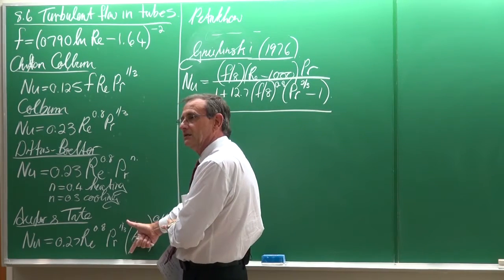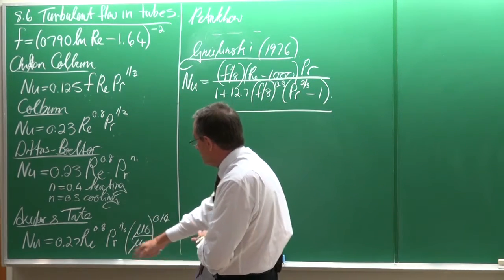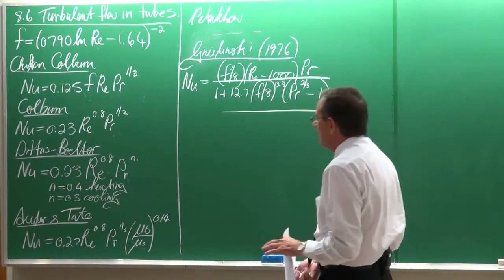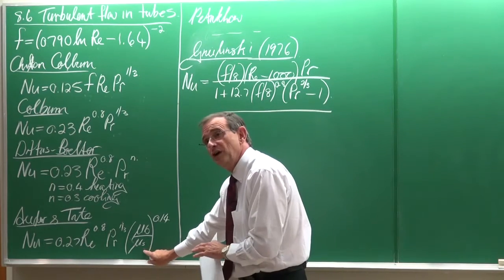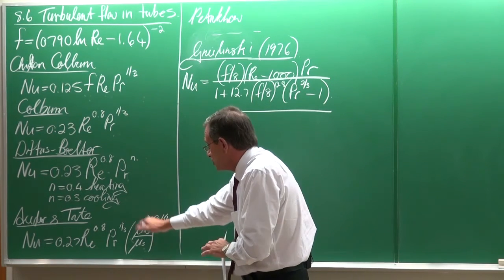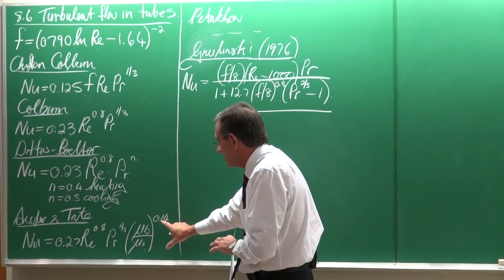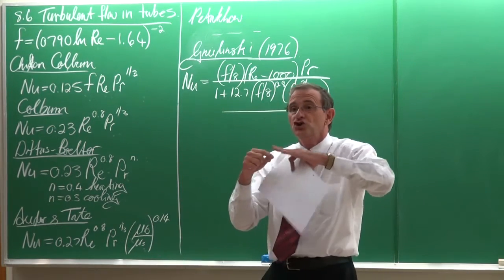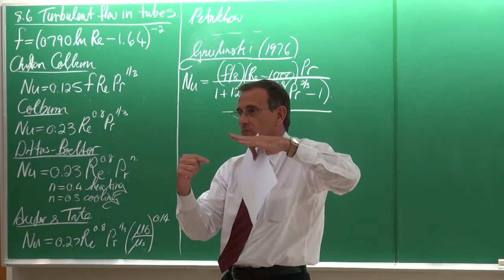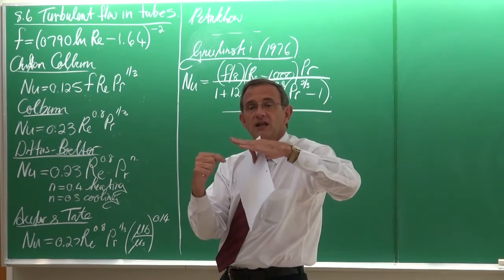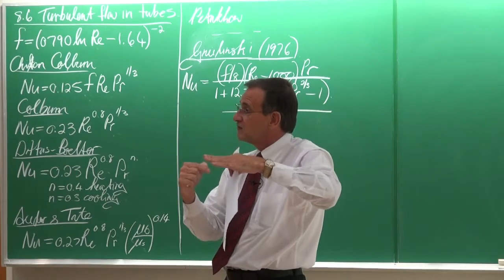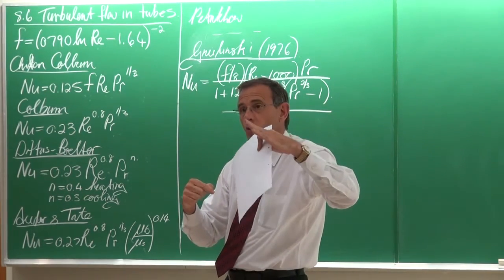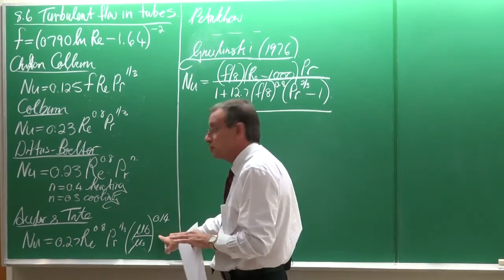Then, Sider and Tate developed this equation. And you'll see that there are similarities, but now we've got this term in here. Again, if you look at the fine print underneath the equation or at the equation, you will see that this equation has been developed where there are huge temperature differences between the wall and the bulk. So normally, high heat fluxes. If the heat flux is very, very high, and there are high temperatures between the wall and the bulk, then you use this equation.